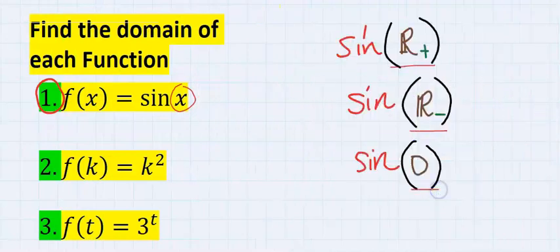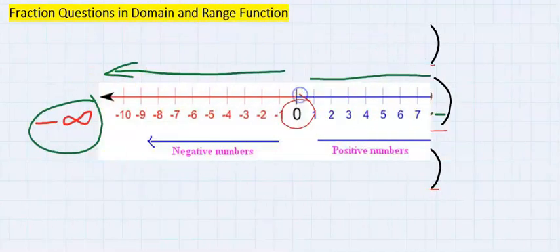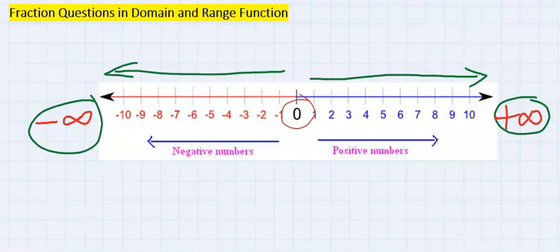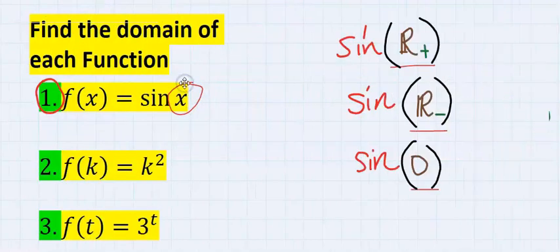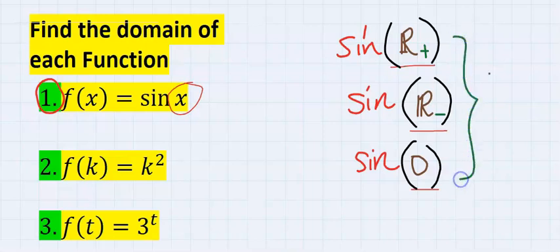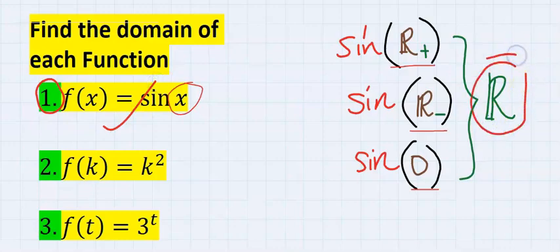And it will equally take zero. If you input any of these numbers in your calculator for sine x, there won't be any problem. Hence sine can take all real numbers. For number one, our answer is all real numbers.